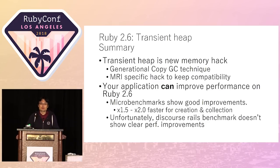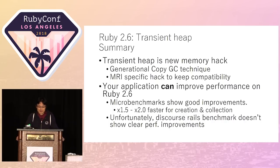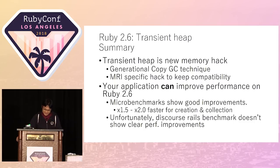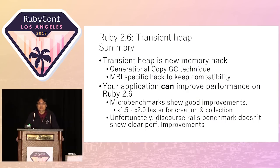Let's summarize transient heap on Ruby 2.6. Transient heap is a new memory hacking technique to improve performance. It uses generational copy-GC technique with MRI-specific hacking to keep compatibility with current code. With transient heap, you can improve your application's performance — microbenchmarks show good results, but I can't see performance improvement on some broader benchmarks, so it may depend on the application. You can try it now.